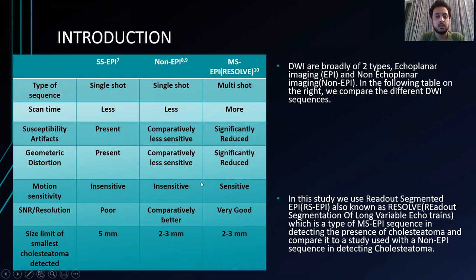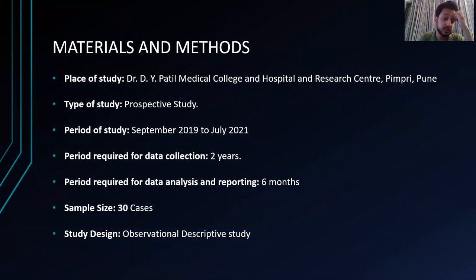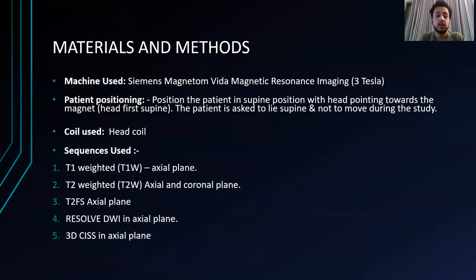Non-EPI is most commonly used for cholesteatoma nowadays, but we have done this study to evaluate multi-shot EPI in detecting cholesteatoma. Our sample size is 30 and the cases were taken between September 2019 and July 2021. The sequences used are T1, T2 axial and coronal plane, T2FS, RESOLVE DWI axial plane, and 3D SIS sequence.